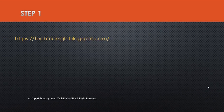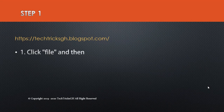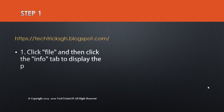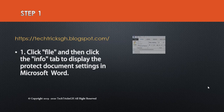Step 1. Click File and then click the Info tab to display the Protect Documents settings in Microsoft Word.